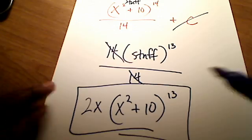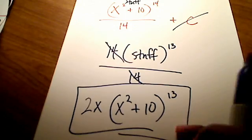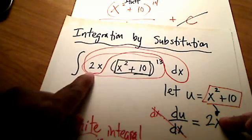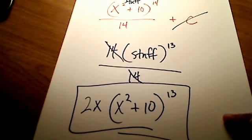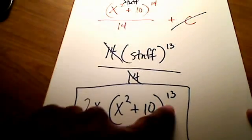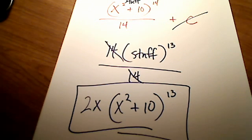So, let's see. Was this our original problem? Was that our original integrand? And sure enough, it was, right? It was 2x, x squared plus 10 raised to the 13th. And that's what we have, 2x, x squared plus 10 raised to the 13th. So it worked. That's our check.